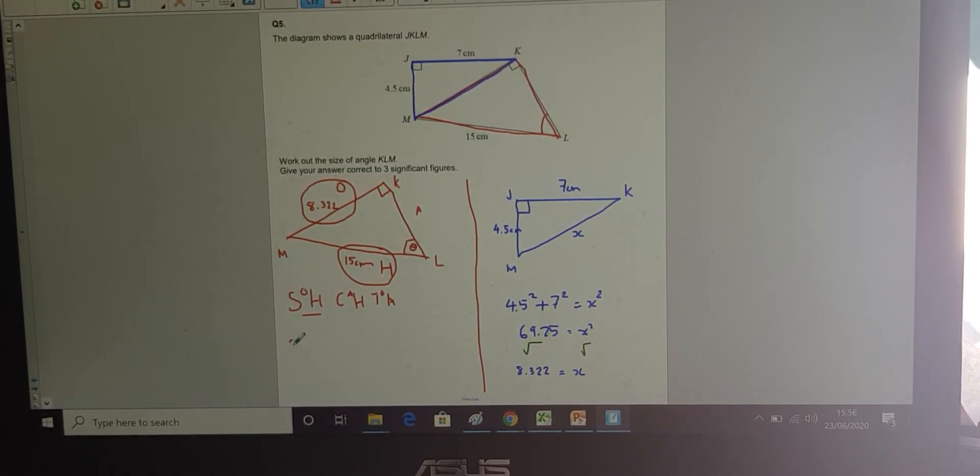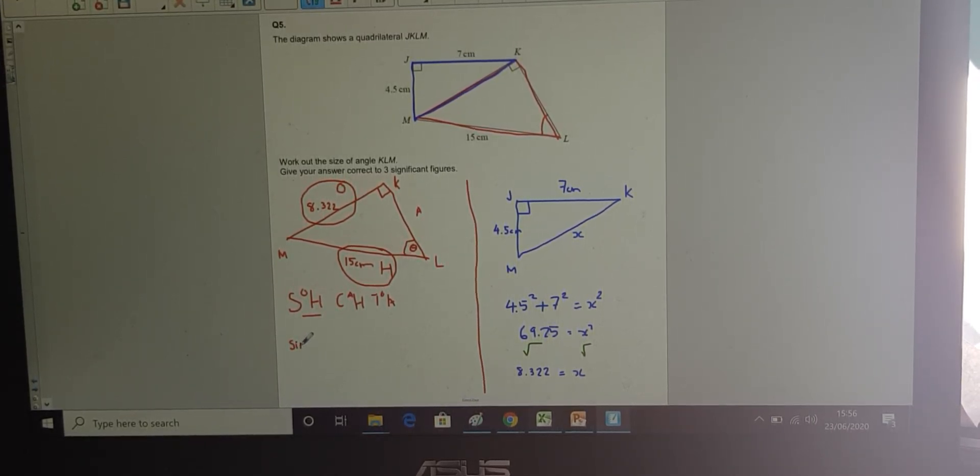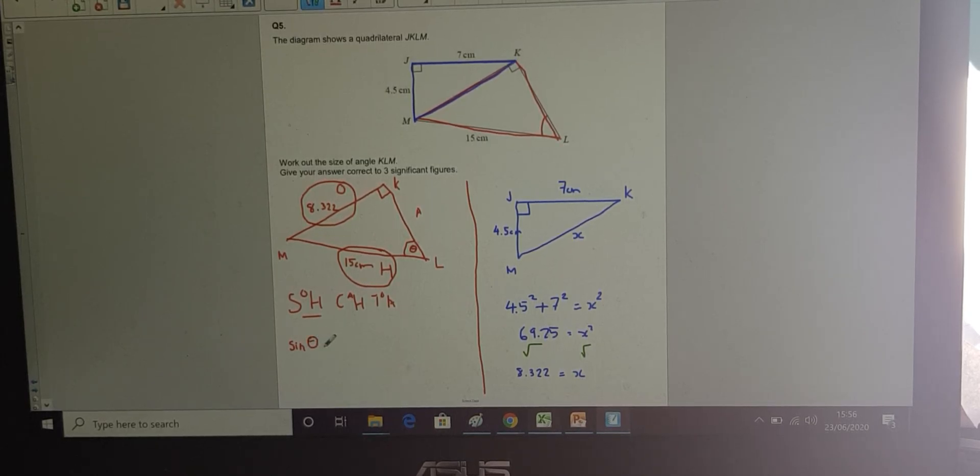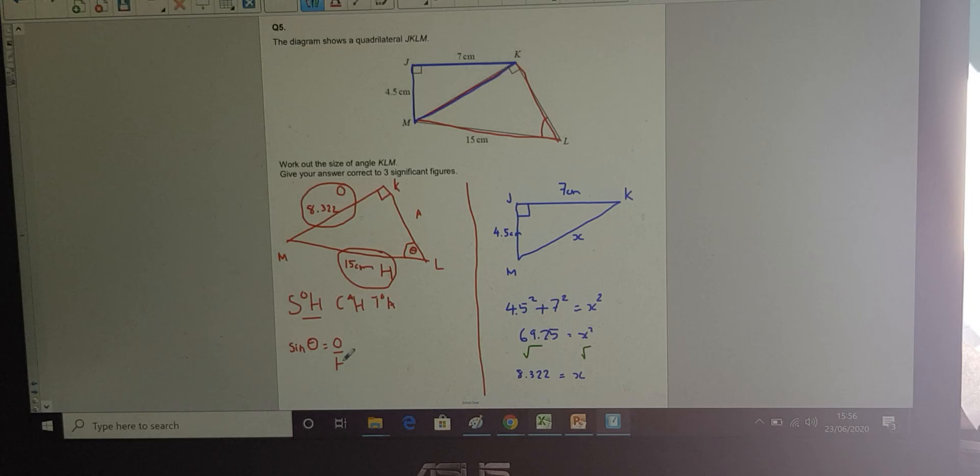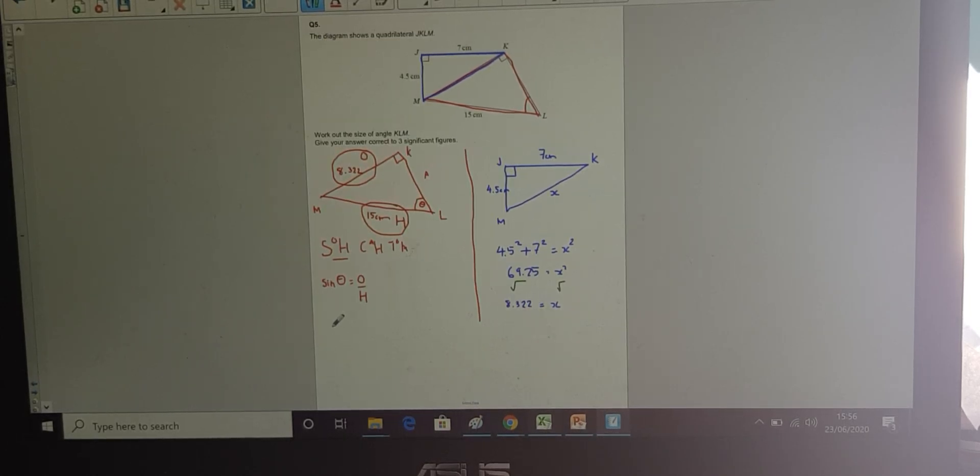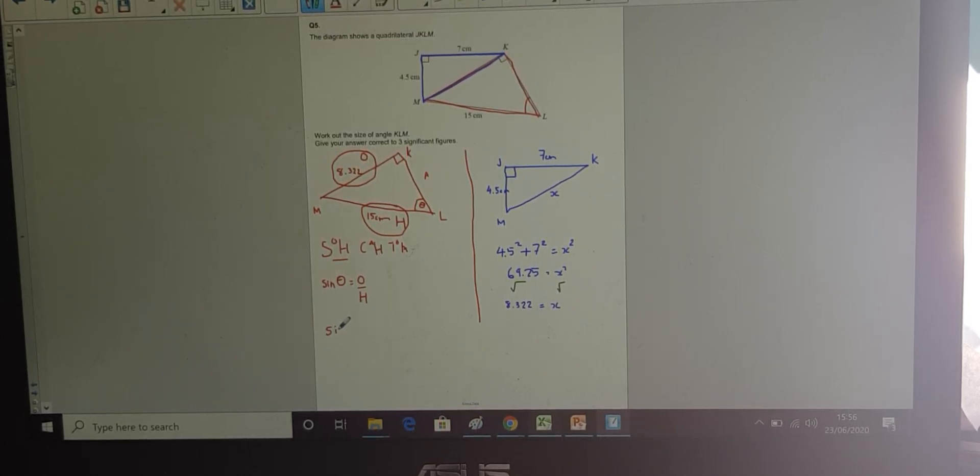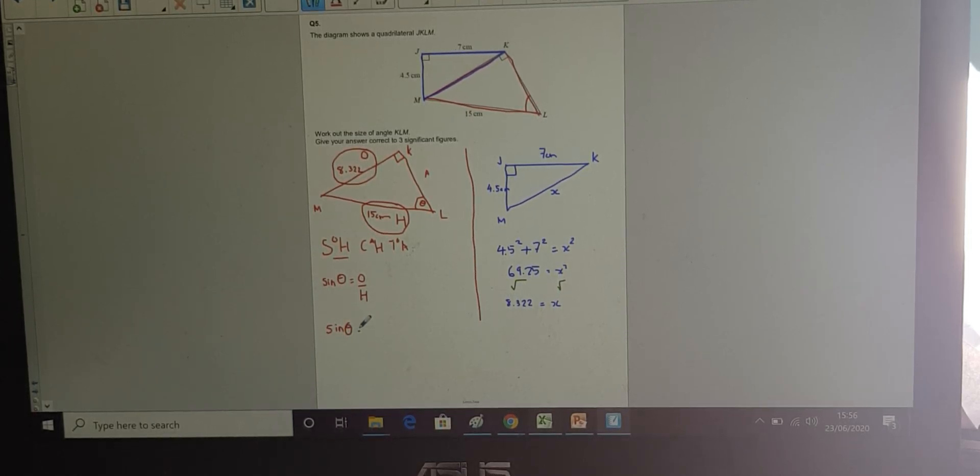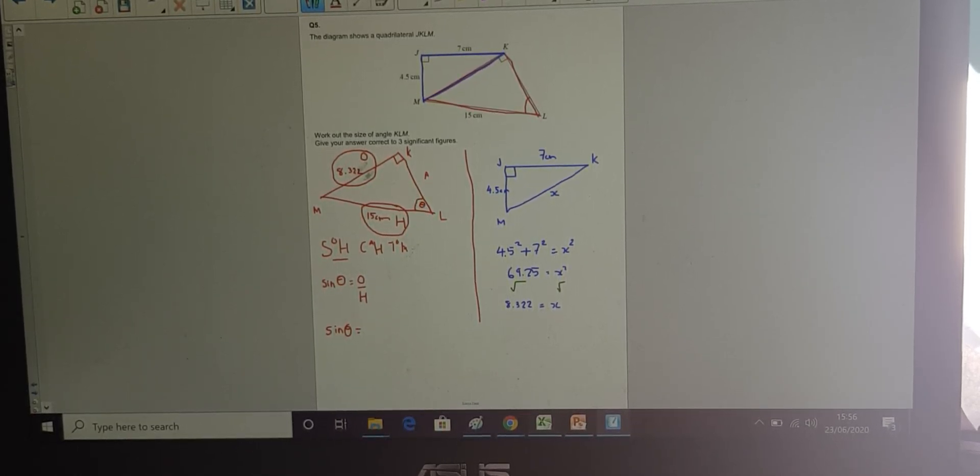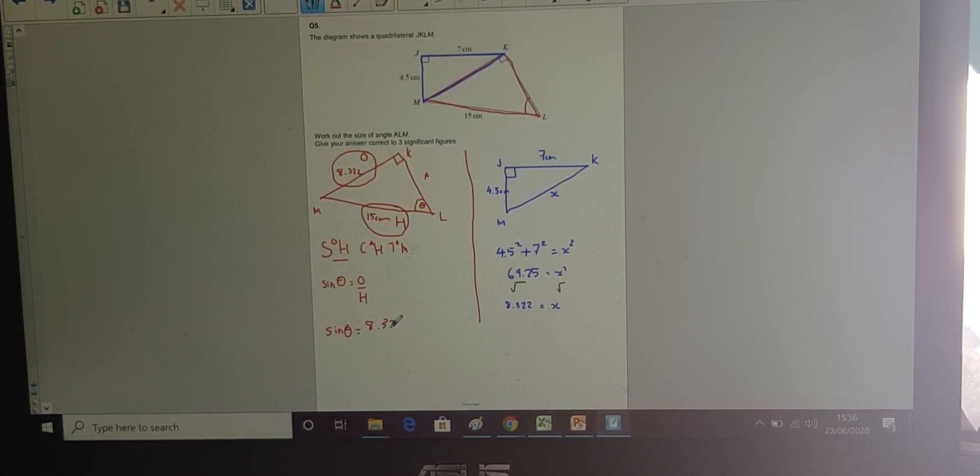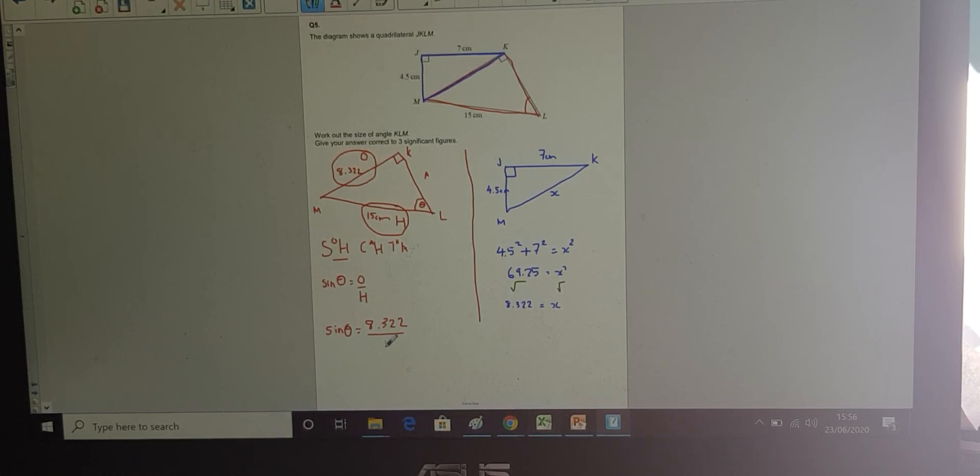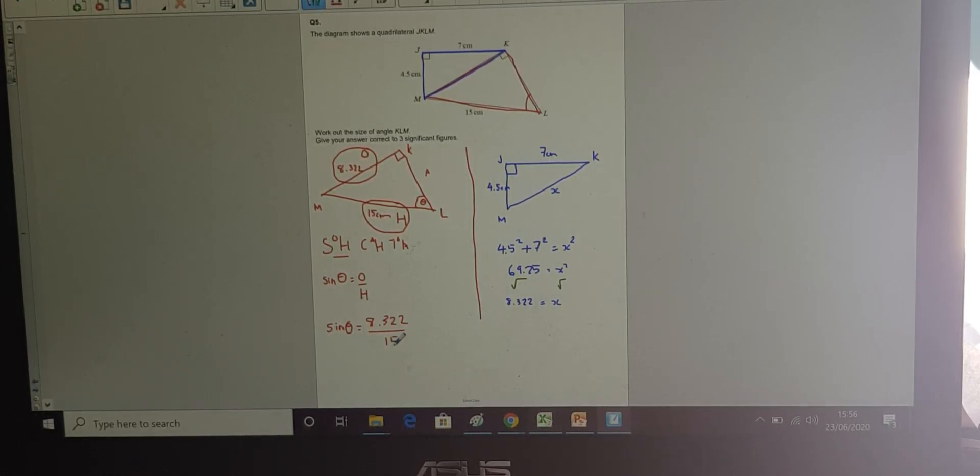So let's write out that properly. That tells me that sine of the angle is equal to the opposite length over the hypotenuse. Now, I put in the values that I know. Sine of the angle, which is what we're trying to work out, is equal to the opposite side, which is 8.322, divided by the hypotenuse, which is 15.